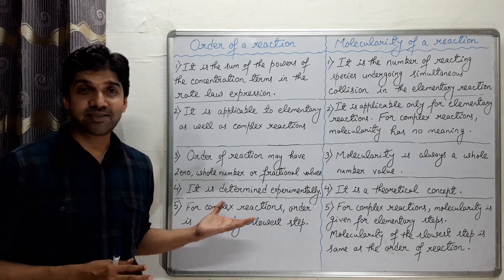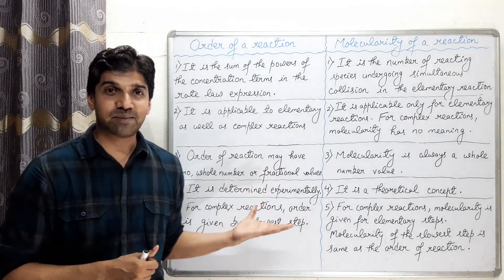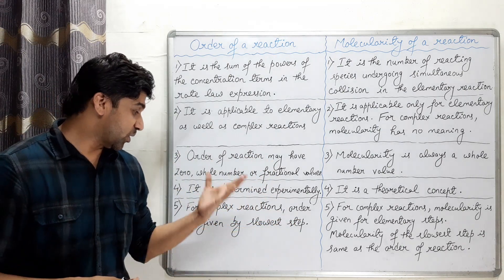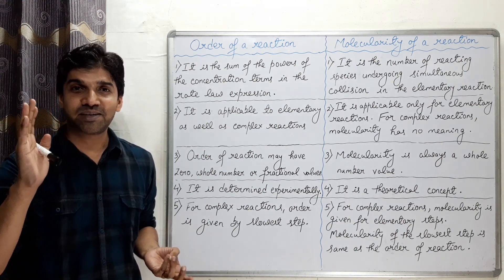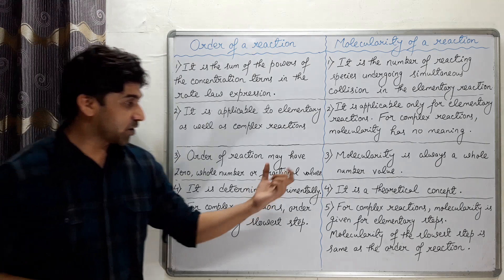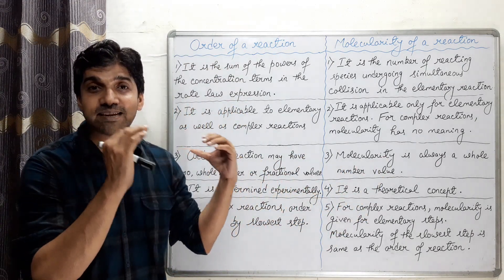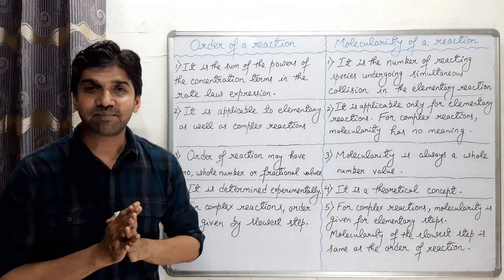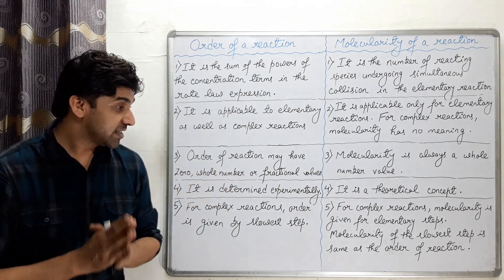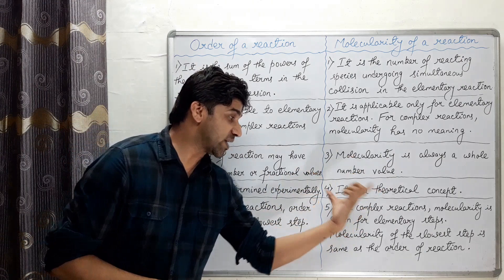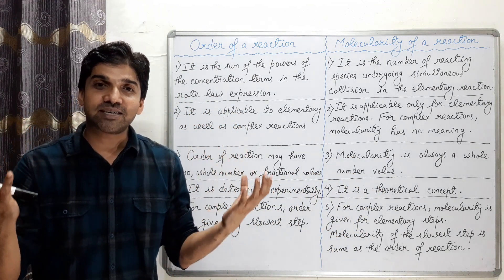For complex reactions, order is given by the slowest step — the rate-determining step. For complex reactions, molecularity is given for each elementary step. The molecularity of the slowest step is the same as the order of reaction.